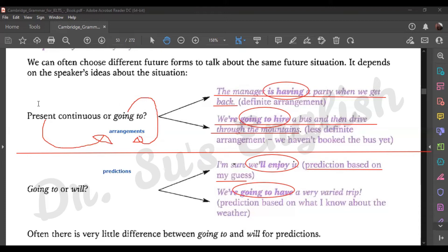Present continuous is more definite, going to is less definite arrangement. Is this clear?